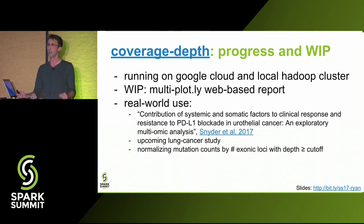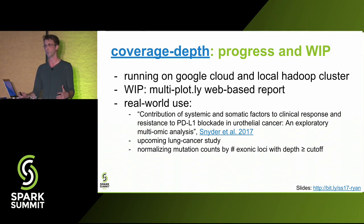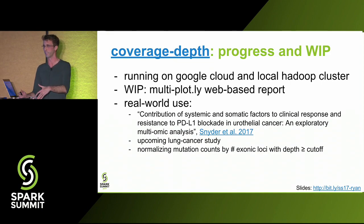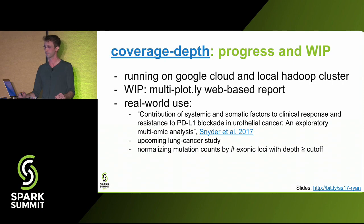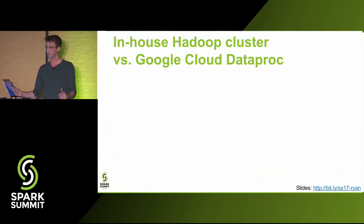In both cases the niche it fills is to help normalize the number of mutations observed in cancer samples from TCGA against the number of loci sequenced to at least a minimum sufficient depth. The goal is to identify elevated mutational burden in specific kinds of cancer or after checkpoint blockade treatment. Here are some quick notes about the tale of two infrastructures.